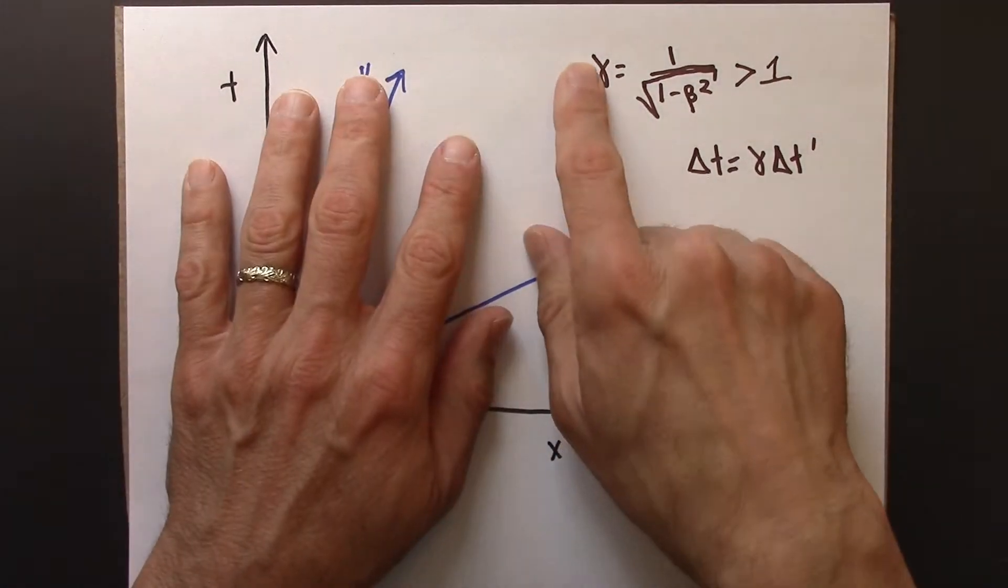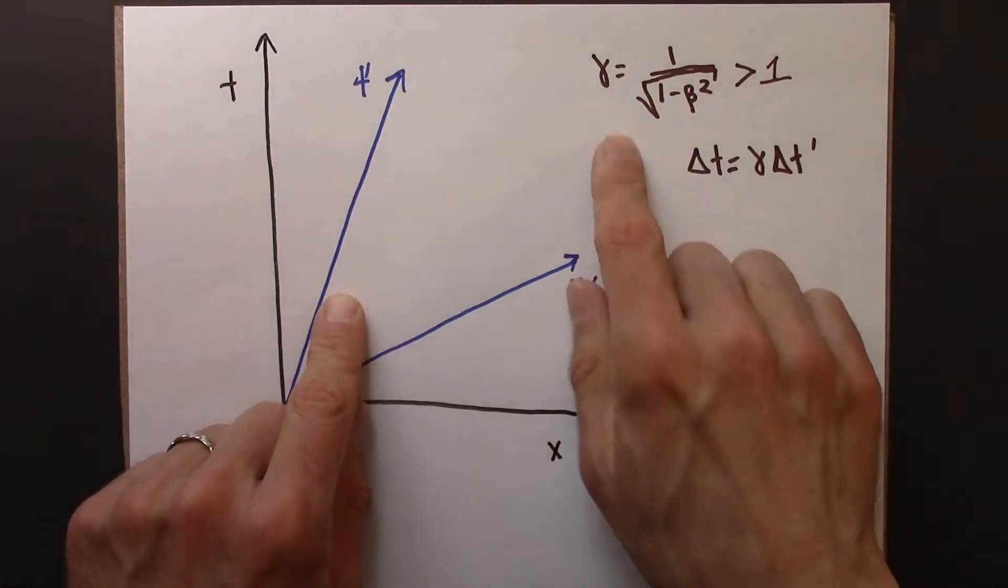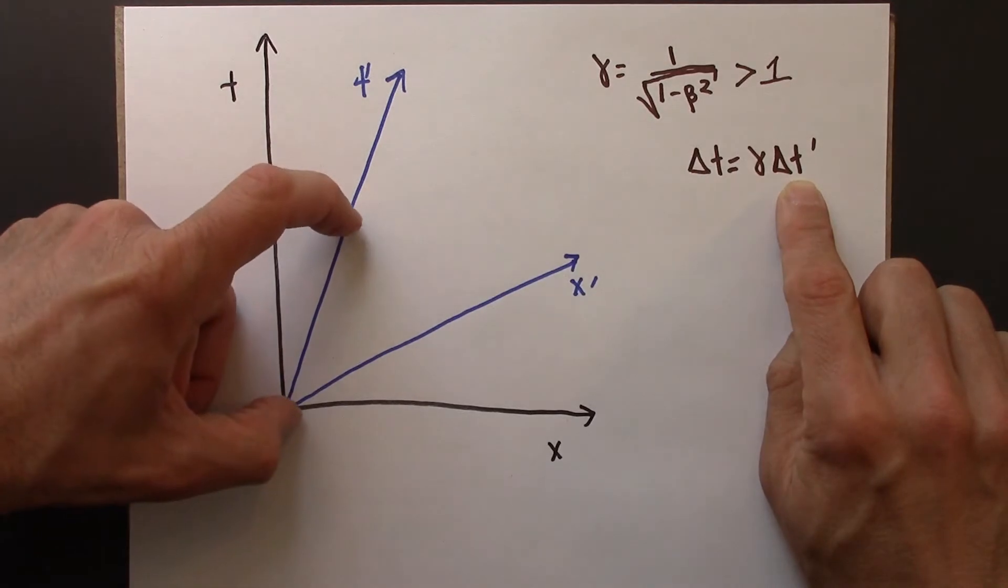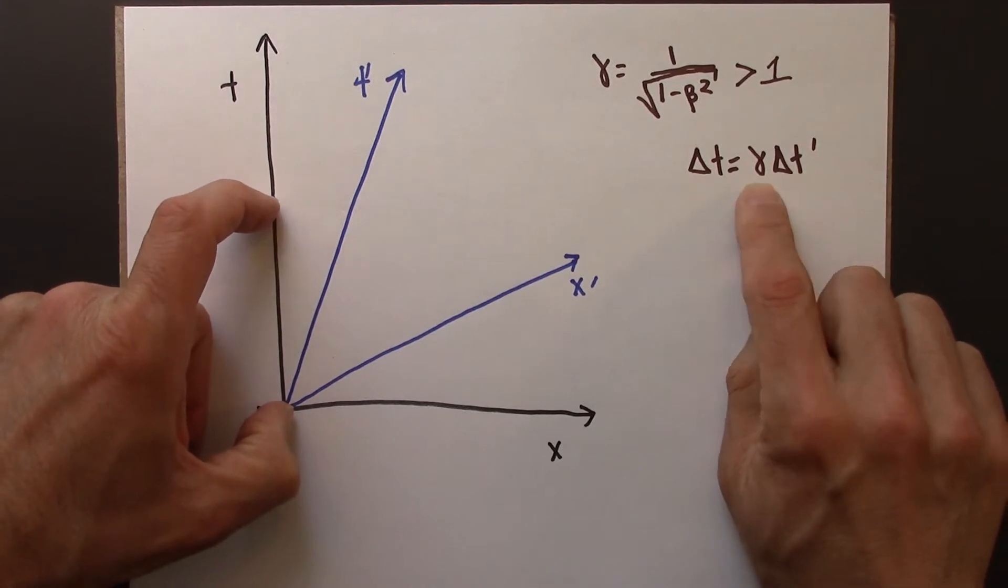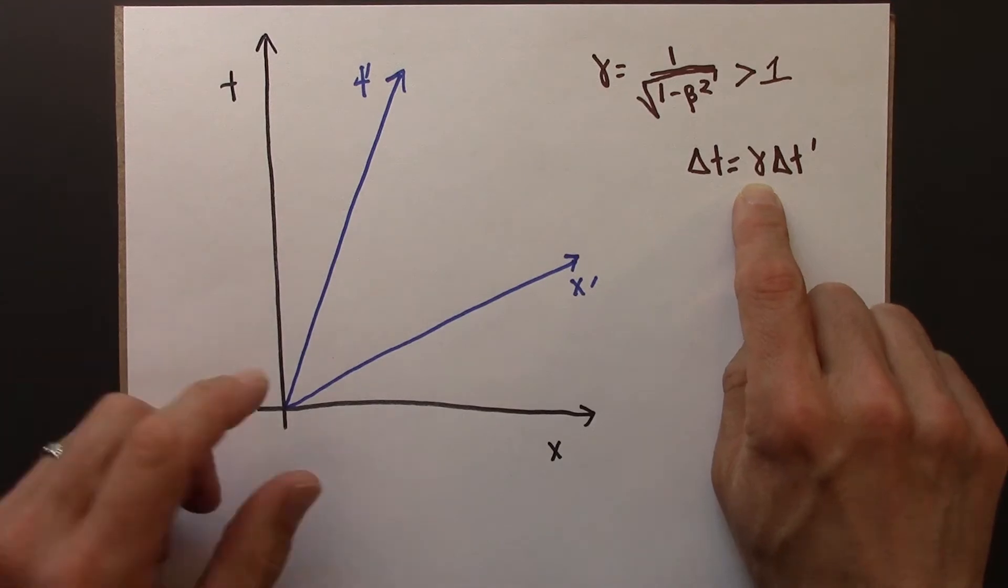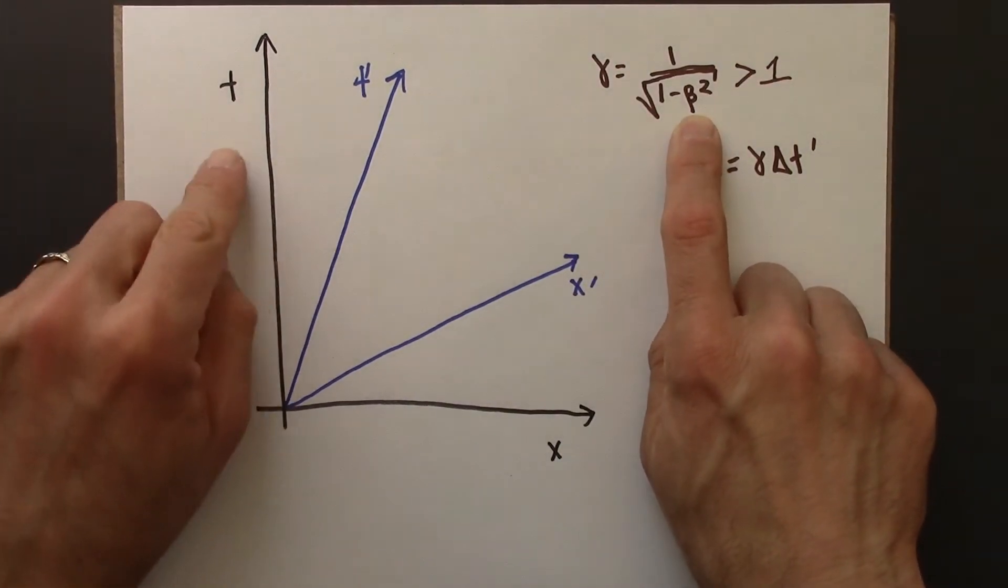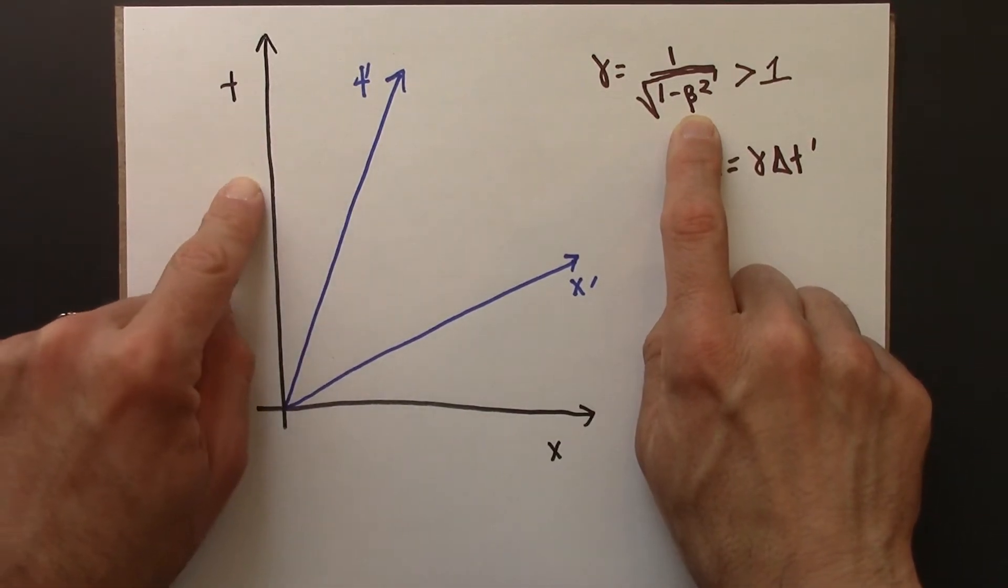And we saw in a previous video that this is how you do it. We did a little bit of geometry and algebra, and we came up with this: that a time interval measured in the primed frame, in the moving frame, in order to convert that into the at-rest frame, we need to multiply it by this gamma factor. And gamma is this function of beta, where beta is the speed at which the blue frame is moving with respect to the black frame.